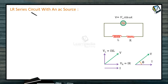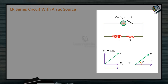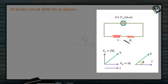Let us now see the LR circuit with an AC source. The AC source V = V₀ sin(ωt) is connected across an inductor and a resistor. Consider a circuit with resistance and inductor connected in series with an alternating source of potential V.